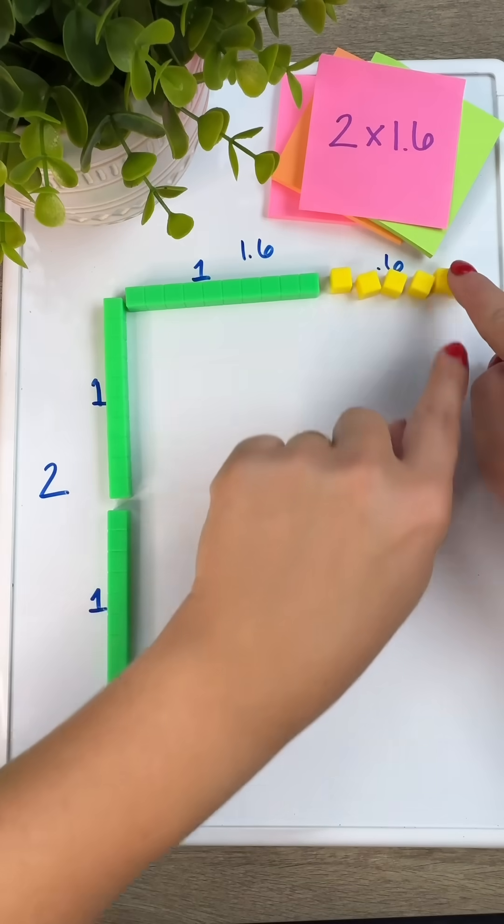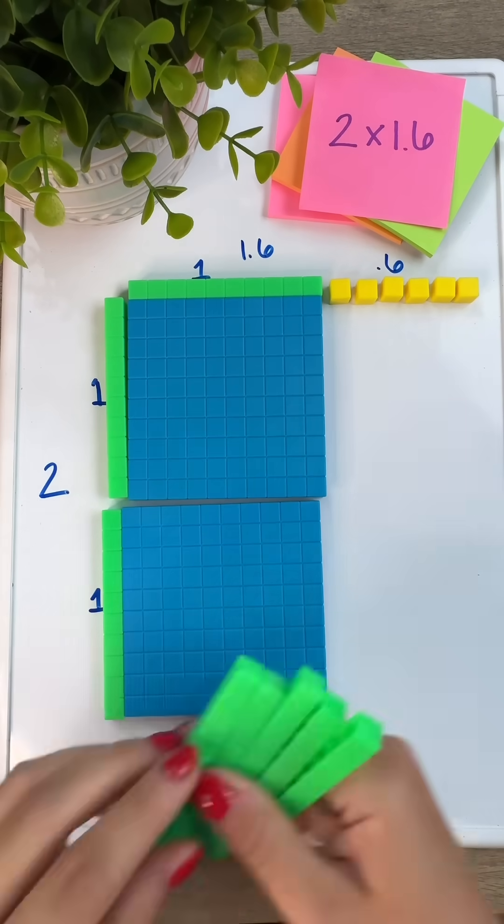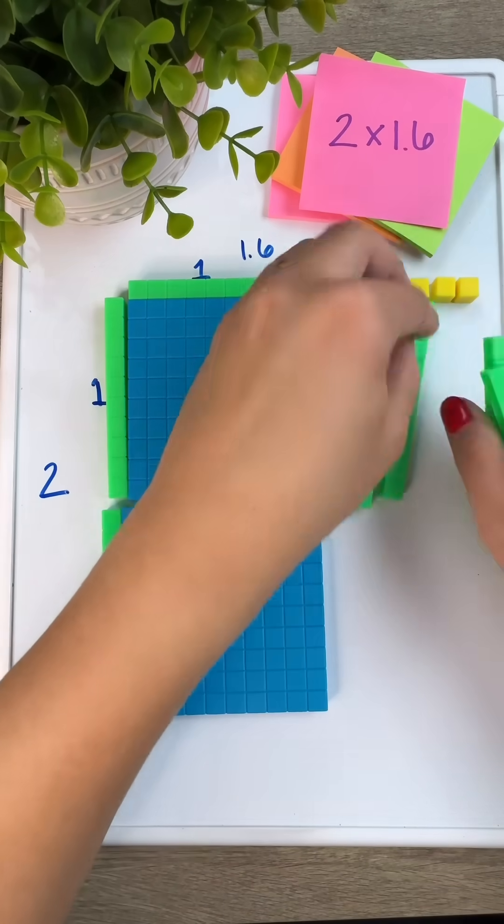You can see it's the same exact strategy we use with whole numbers when filling in the area model to find those partial products.